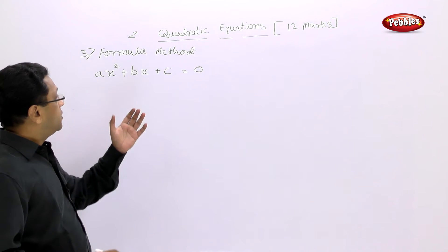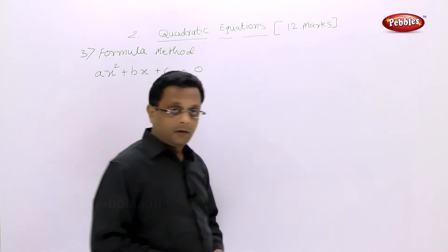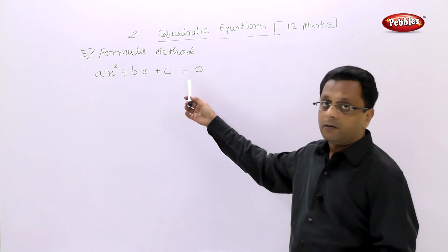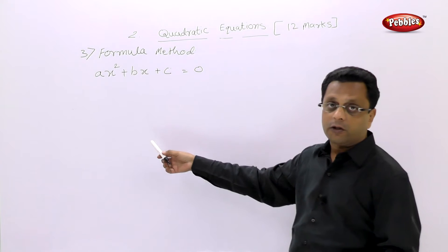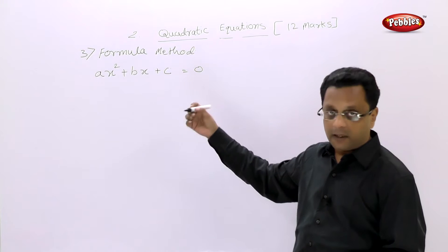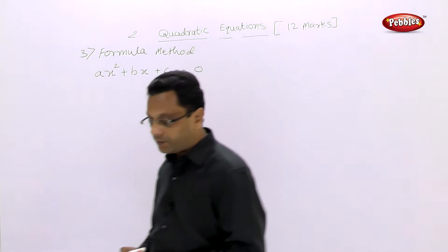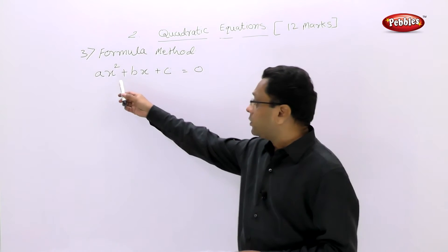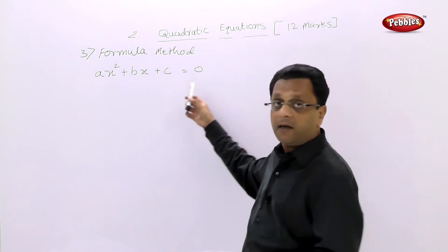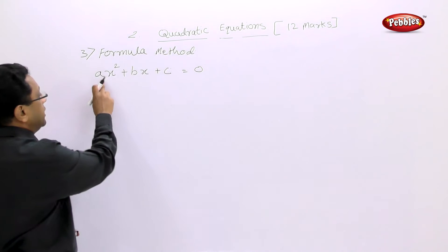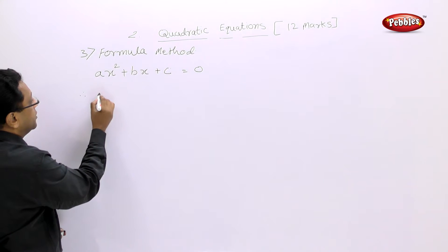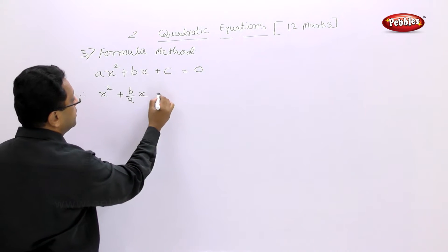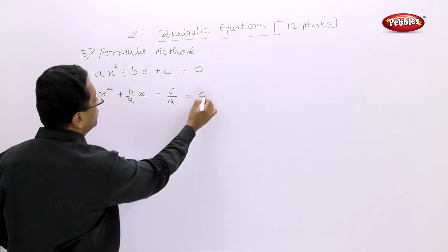The formula is derived by the completing the square method. Since we want only x² here, we divide everything by A to eliminate the A coefficient. So we get x² + (B/A)x + C/A = 0.